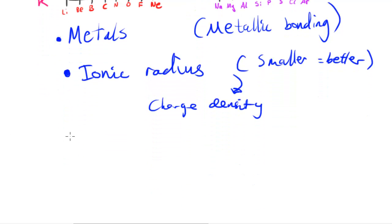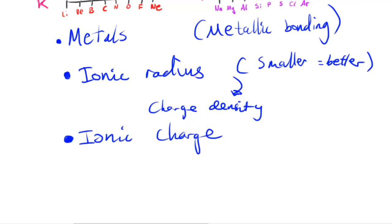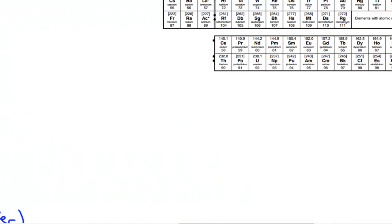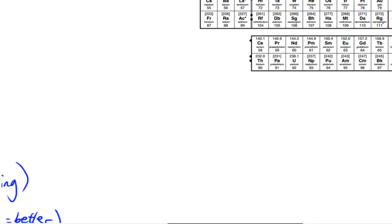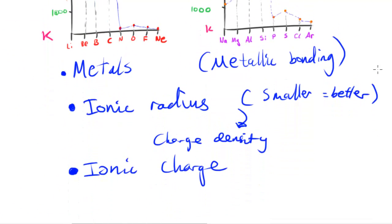Another factor is ionic charge. When an ion has a greater charge, the atom that produced it has released more electrons, meaning the sea of electrons has more electrons in it. Because of that, the force of attraction between the electrons and the ion is going to be greater, so the metallic bond is going to be stronger.